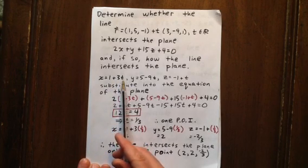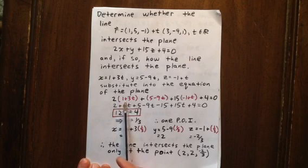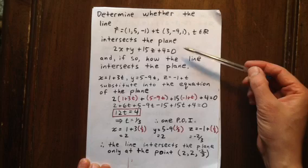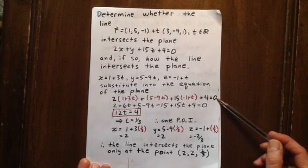And then what we do is we substitute these parametric expressions in for X, Y, and Z in the equation of the plane, like you see here.